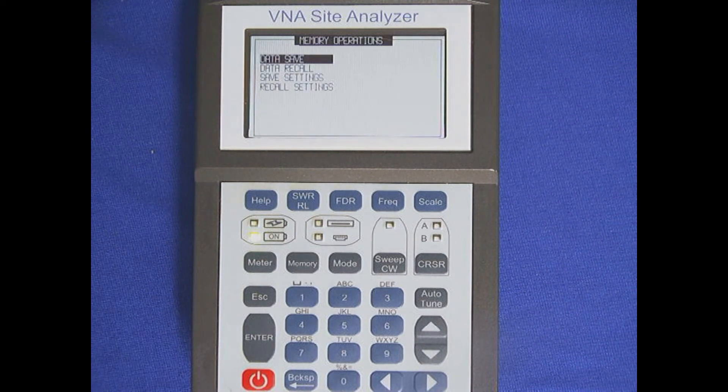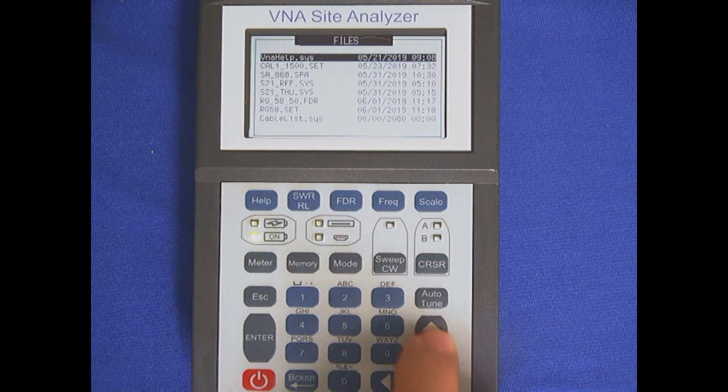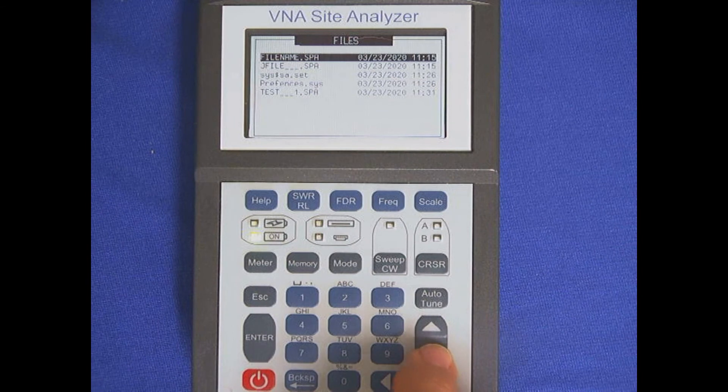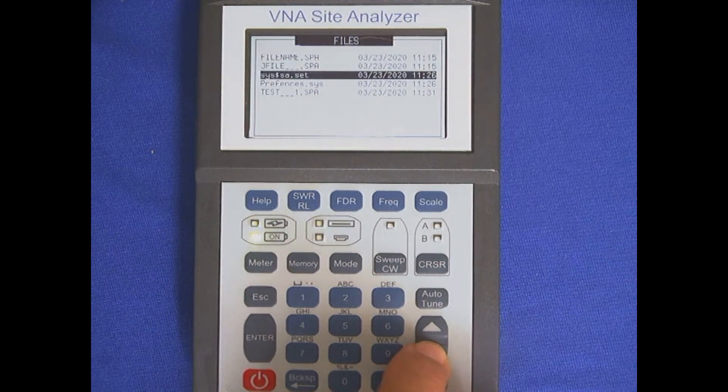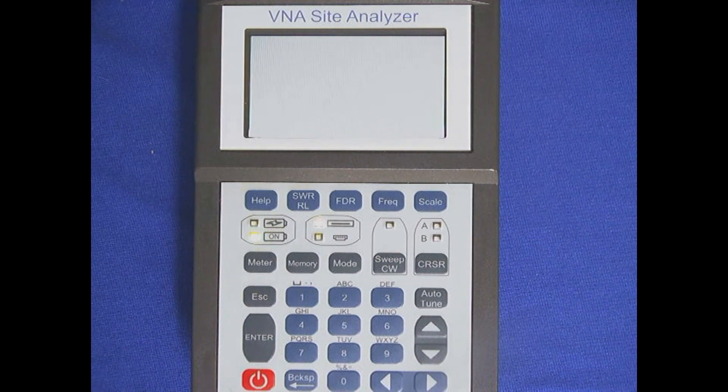To recall that information, just hit Data Recall. Go down and find the test. I can go page by page by hitting my right arrow. You can see it's the last test here. Test 1, SPA for Spectrum Analyzer. And there's the signal that I had recorded.